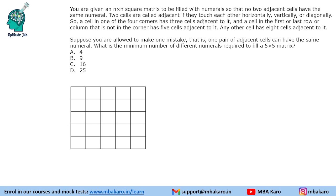Suppose you are allowed to make 1 mistake — that is, 1 pair of adjacent cells can have the same numeral. What is the minimum number of different numerals required to fill a 5×5 matrix? We fill the matrix as in the previous case and try to make 1 deliberate mistake. The minimum number was 4 before — even if we place a 2 adjacent to another 2, making 1 mistake, we are still able to fill the matrix with a minimum of 4 numbers.